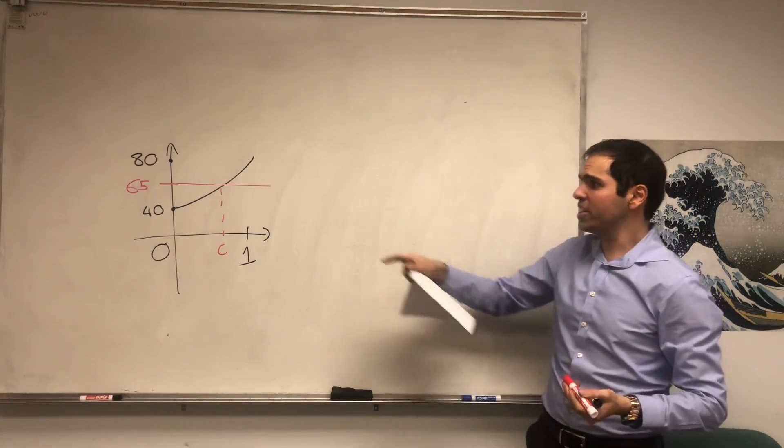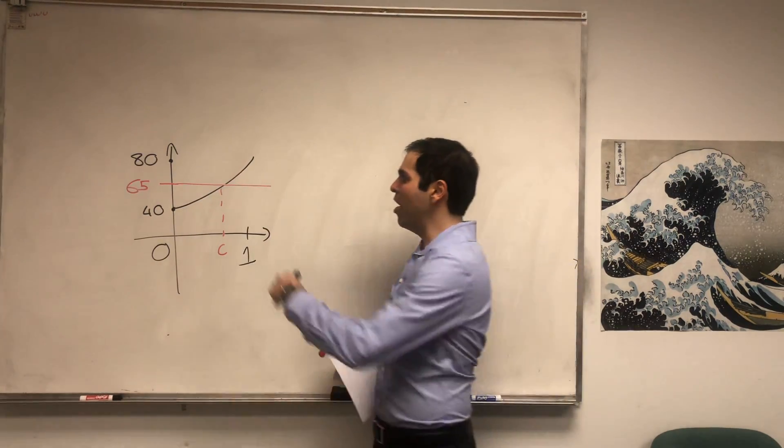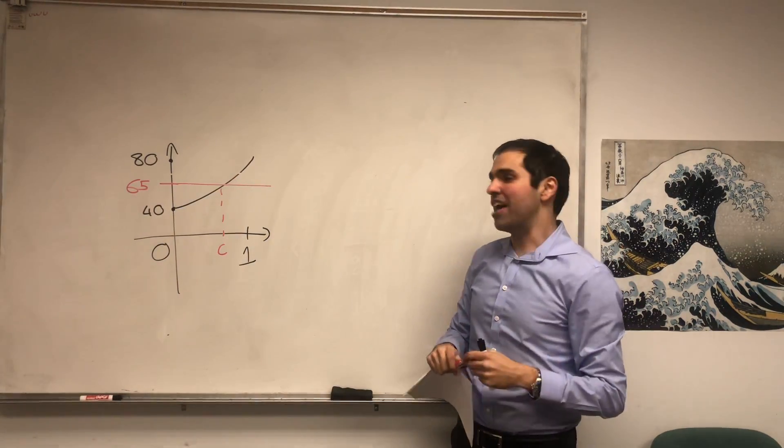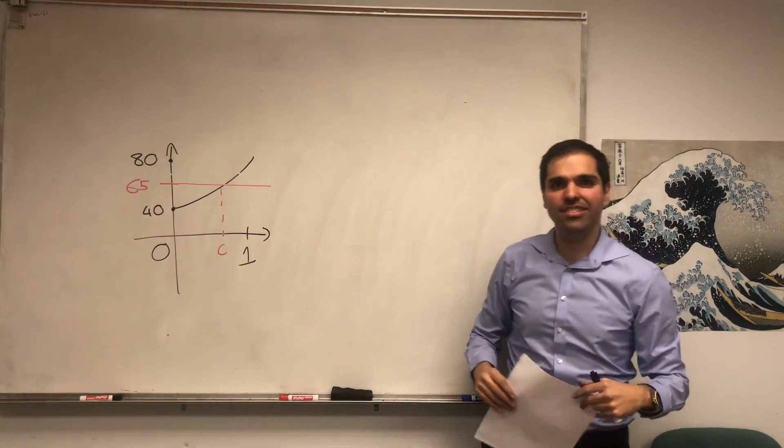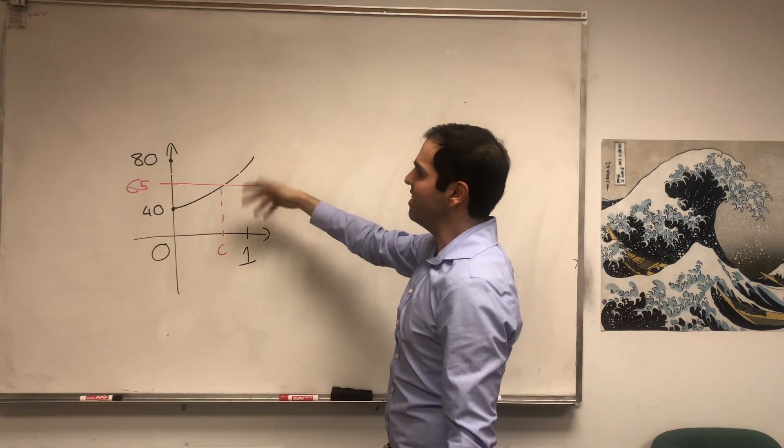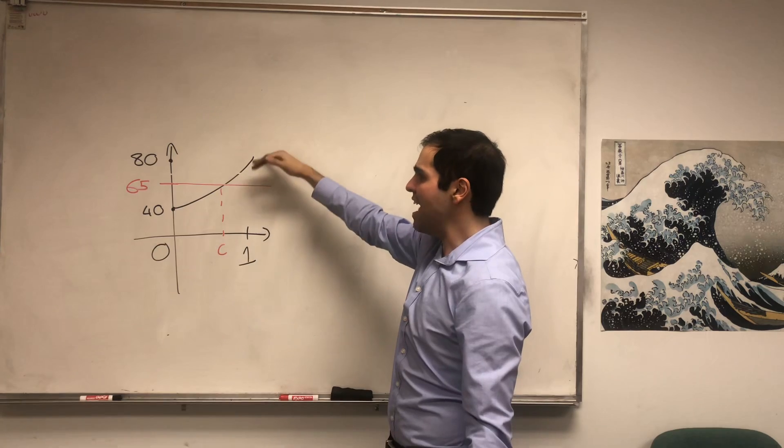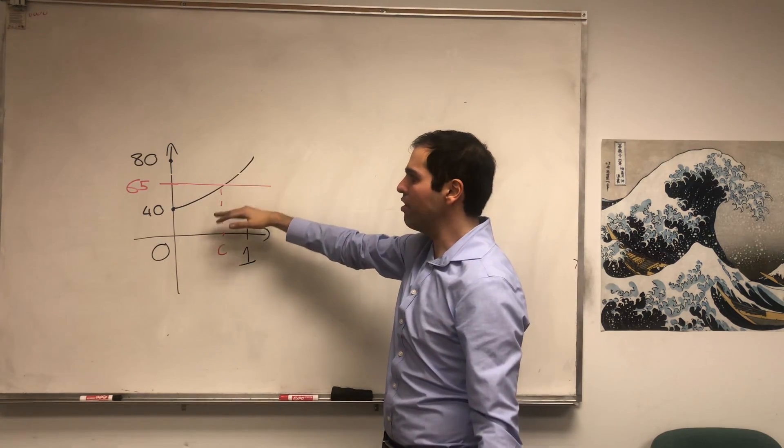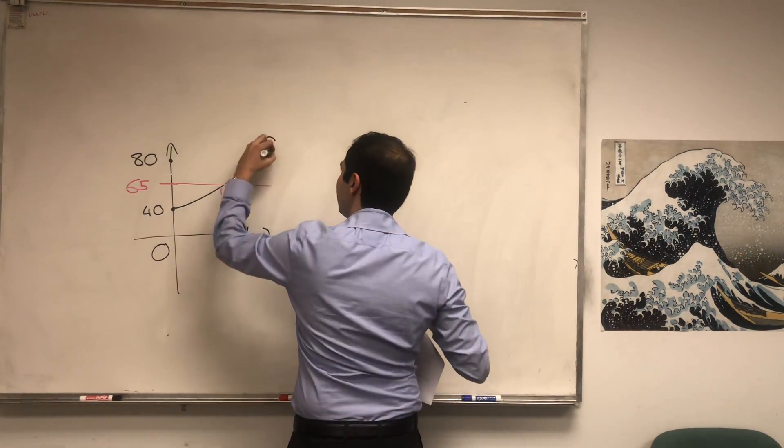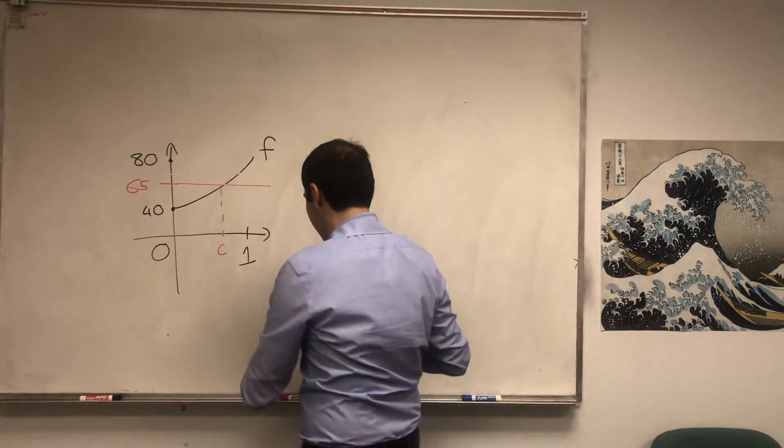But also question, what if the speed limit were 70? Well, not a problem. You would still have at least some time where your speed was 70 miles per hour, where you really crossed the speed limit. And this is, as I said, the essence of the Intermediate Value Theorem. Namely, any continuous function attains all the values between the initial value and the final value. So in this case, f attains all the values between 40 and 80.